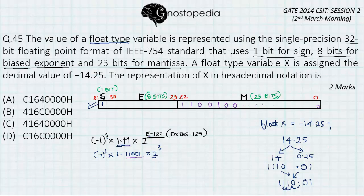Then we have E minus 127 is equal to 3. With this, we get E is equal to 130, which is in binary 10000010.